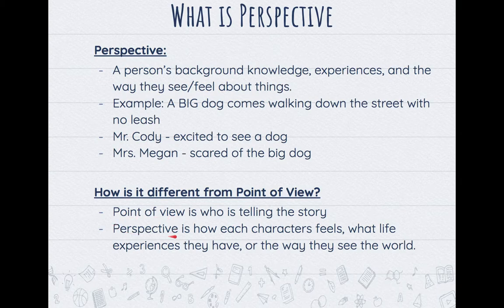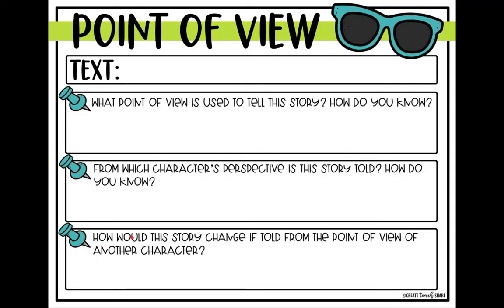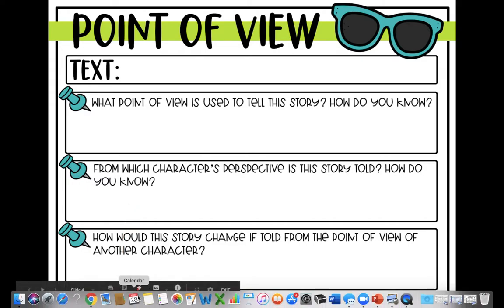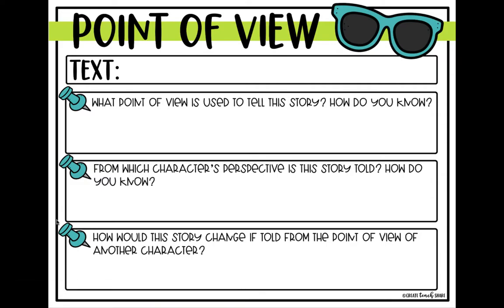Sometimes a book is going to focus on just one character's perspective. So we're going to fill out a graphic organizer, and I'm going to use The Legend of Rock, Paper, Scissors to help me. This graphic organizer looks exactly identical to the one you're going to have to fill out. So follow along with me and this will help you out with yours. Where it says text, I need to put the title of whatever book or article I'm using — The Legend of Rock, Paper, Scissors. So here's my first question: what point of view is used to tell the story, and how do you know?